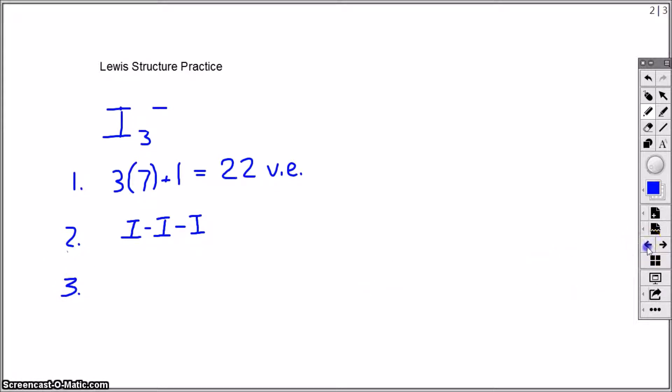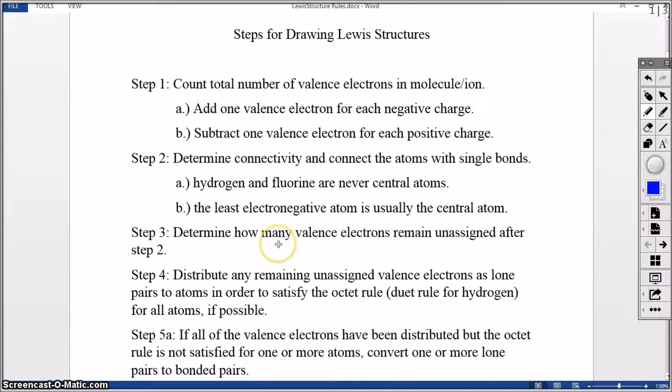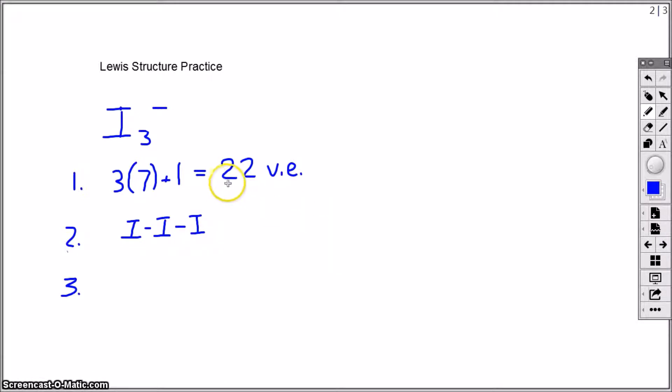In step three, I then need to determine how many valence electrons have I yet to assign so far, keeping in mind that I need to eventually assign 100% of these 22 valence electrons. So I start off with 22 valence electrons. By drawing the minimal connectivity in step two, I've used four by drawing those two single covalent bonds. Each single covalent bond represents two electrons. I've used four of my 22, which means I have 18 valence electrons remaining.